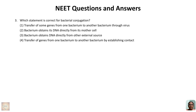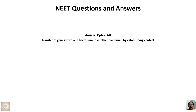Third question: which statement is correct for bacterial conjugation? Option 1 — transfer of genes through a virus — is wrong; conjugation is through cell-to-cell contact. Option 2 — bacterium obtains DNA from its mother cell — is wrong; that is vertical gene transfer, whereas conjugation is horizontal. Option 3 — bacterium obtains DNA from an external source — is wrong; that describes transformation. Option 4 — transfer of genes from one bacterium to another by establishing contact — is the correct answer.